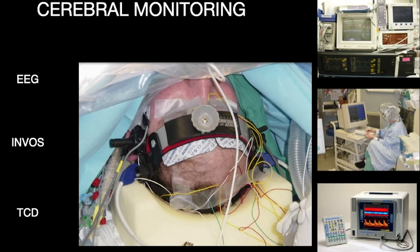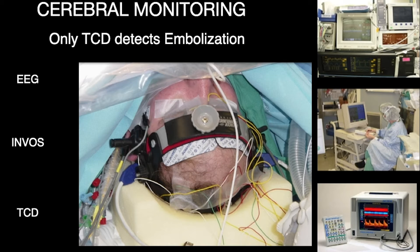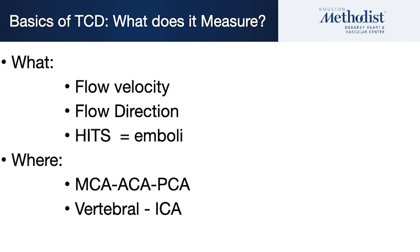Let's back up and talk about the different ways we can monitor what's going on inside somebody's head. We use EEG — those are the electrodes you see here. We can use INVUS, which is really venous oximetry — it tells you about venous oxygen saturation in the frontal cortex. And then we've got transcranial Doppler. The only thing which tells you about embolization, the most common reason for stroke, is transcranial Doppler. None of the others — EEG — really tell you about embolization unless it's truly massive. That's why we've been particularly interested in transcranial Doppler.